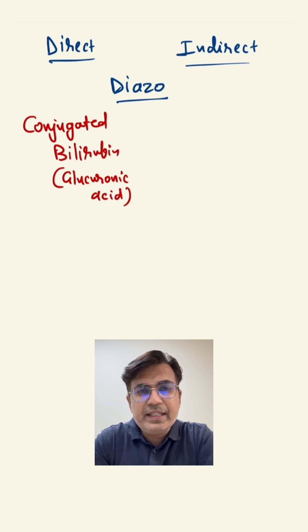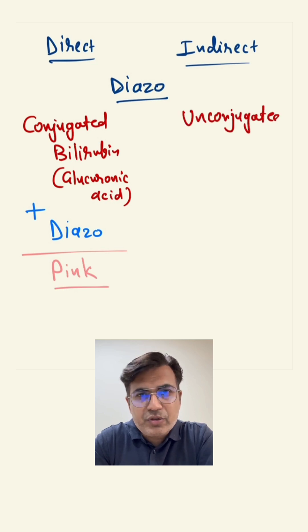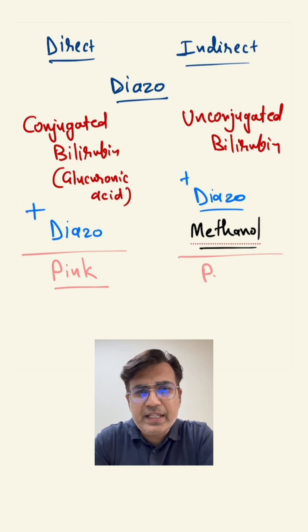Conjugated bilirubin reacts with diazo reagent and gives pink color, but unconjugated bilirubin reacts with diazo reagent only in presence of alcohol compound like methanol and gives pink color.